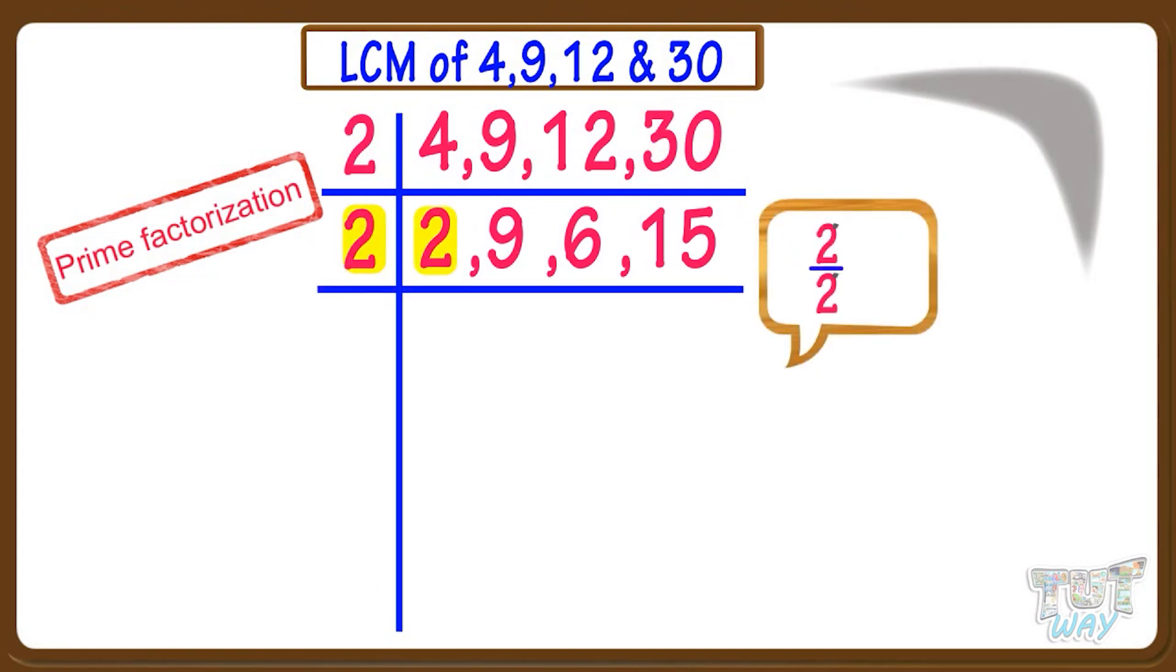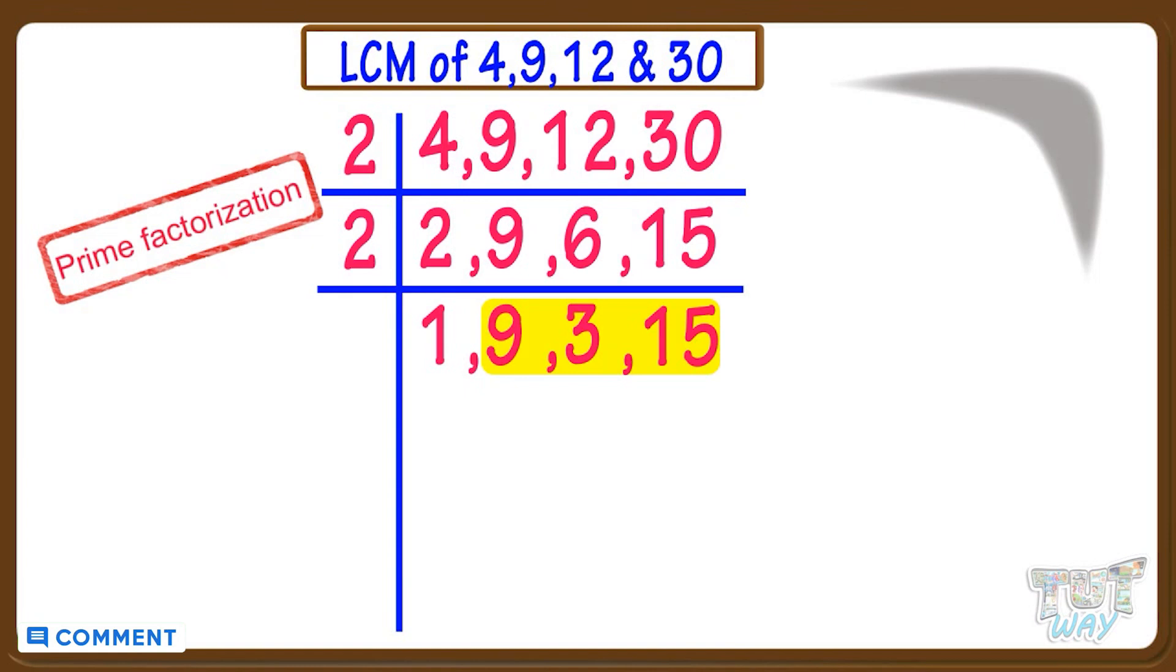2 divided by 2 equals 1. 9 cannot be divided, so write it as it is. 6 divided by 2 equals 3. 15 cannot be divided, so write it as it is. Now we cannot take 2, as not even a single number can be divided by 2. So take the next prime number, that is 3.